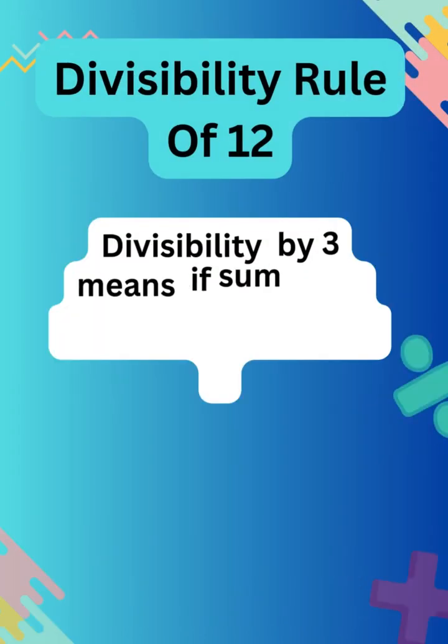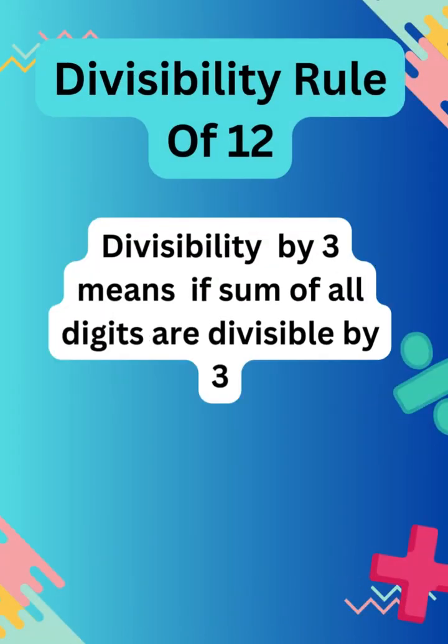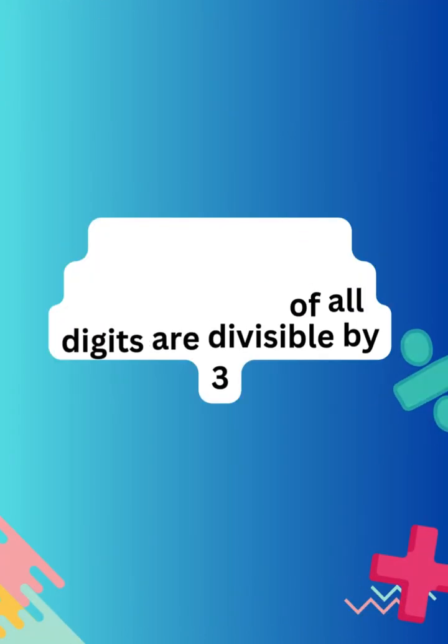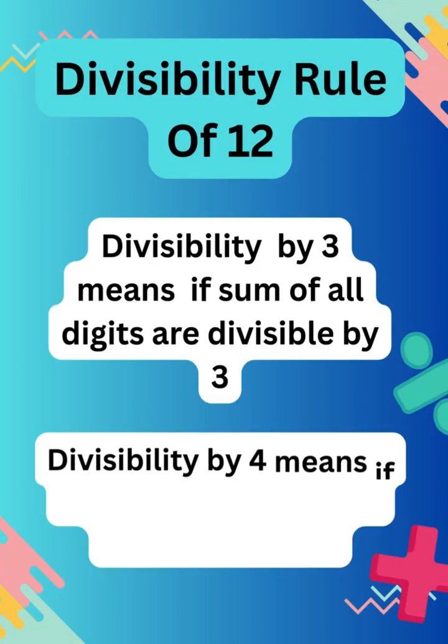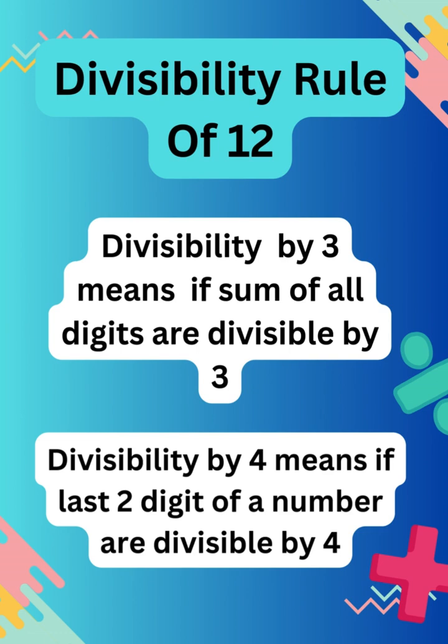Divisibility by 3 means the sum of all digits of a number should be divisible by 3. Then we check divisibility by 4. A number is divisible by 4 when its last two digits are divisible by 4.